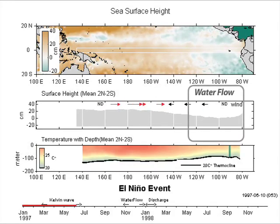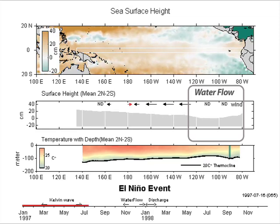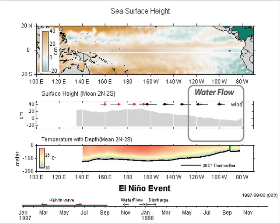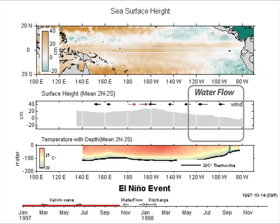In the second panel, sea surface height in the eastern Pacific region increases and the sea surface slope becomes flatter.